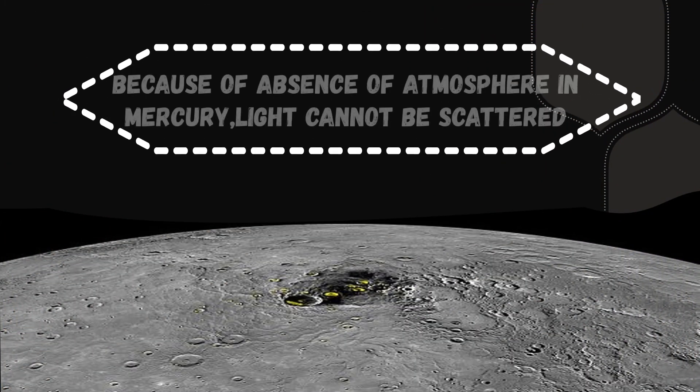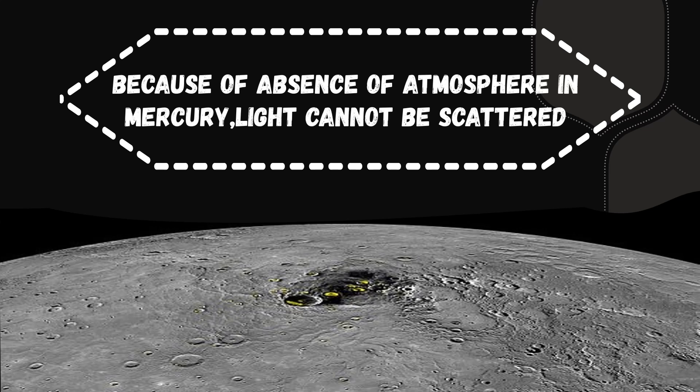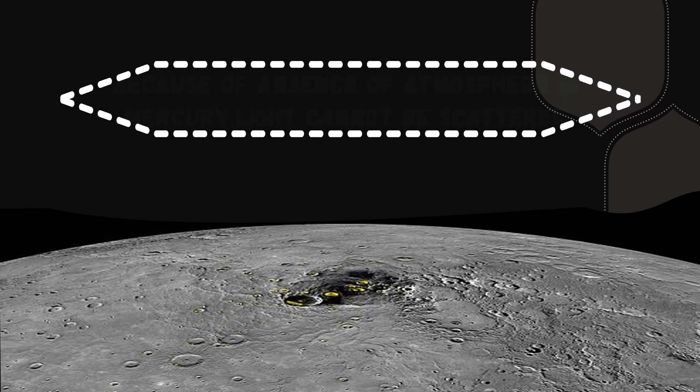However, because of the absence of atmosphere on Mercury, light cannot be scattered. As a result, the sky on Mercury looks dark like space.